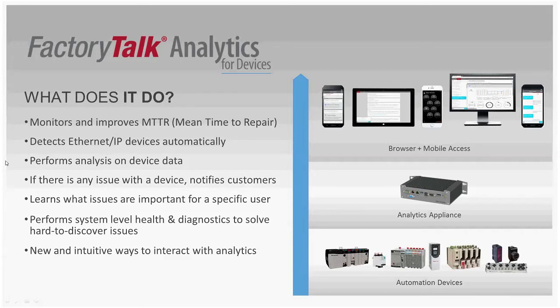The appliance needs power and an Ethernet connection, and then setup is simple — just a few questions get you started, like what language do you speak, what time zone are you in, and how will the appliance get an IP address. Once on the network, Shelby does the rest, and a single Shelby appliance can detect up to 100 devices of your choosing on your network.